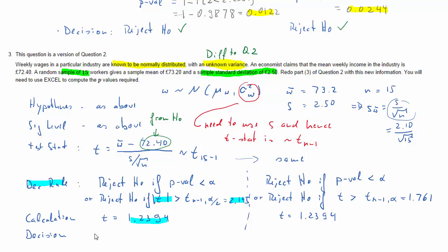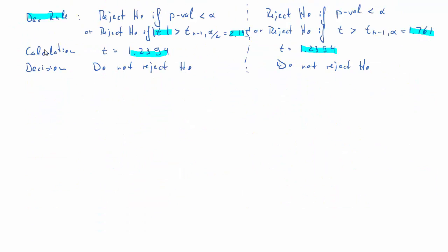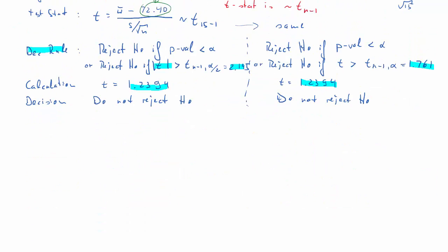Applying the decision rules using critical values: for the two-tailed test, t = 1.2394 is not larger than 2.145, so we do not reject H₀. For the upper-tailed test, 1.2394 is smaller than 1.761, so we also do not reject H₀. Both conclusions are the same: fail to reject the null hypothesis using the critical value approach.